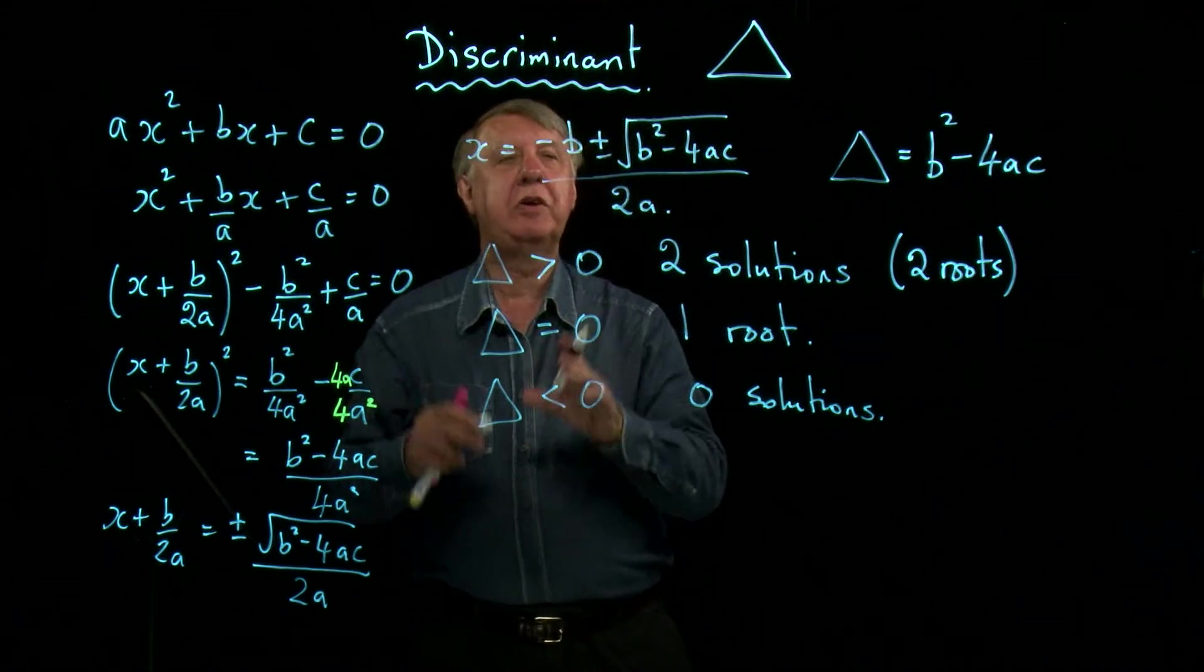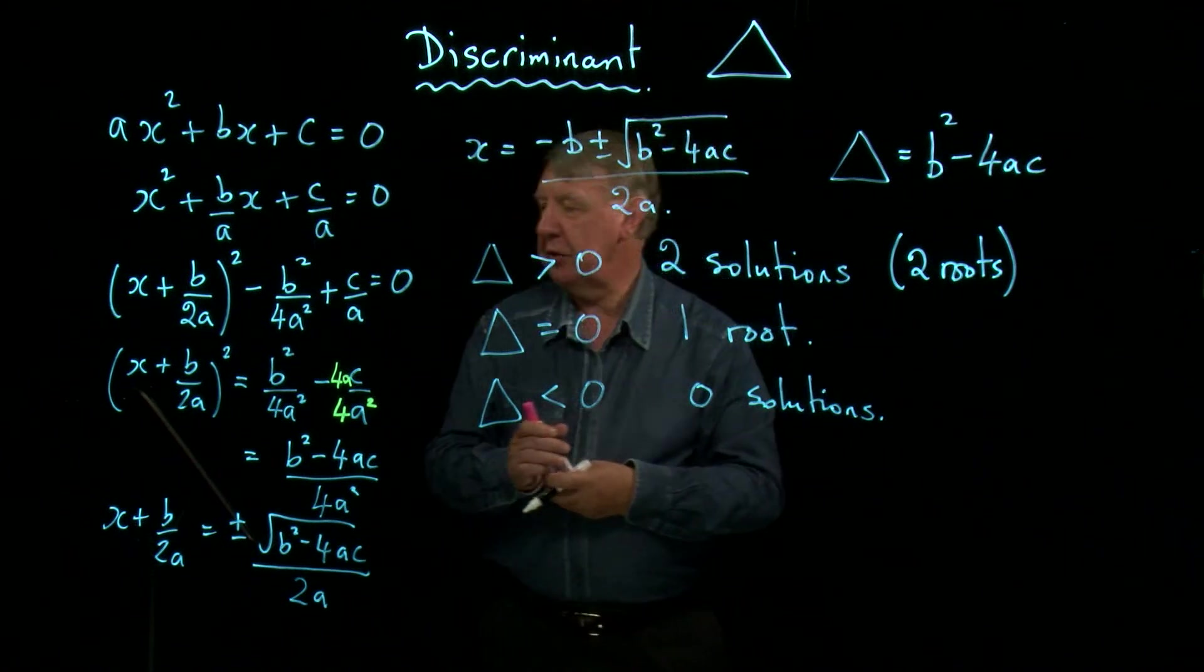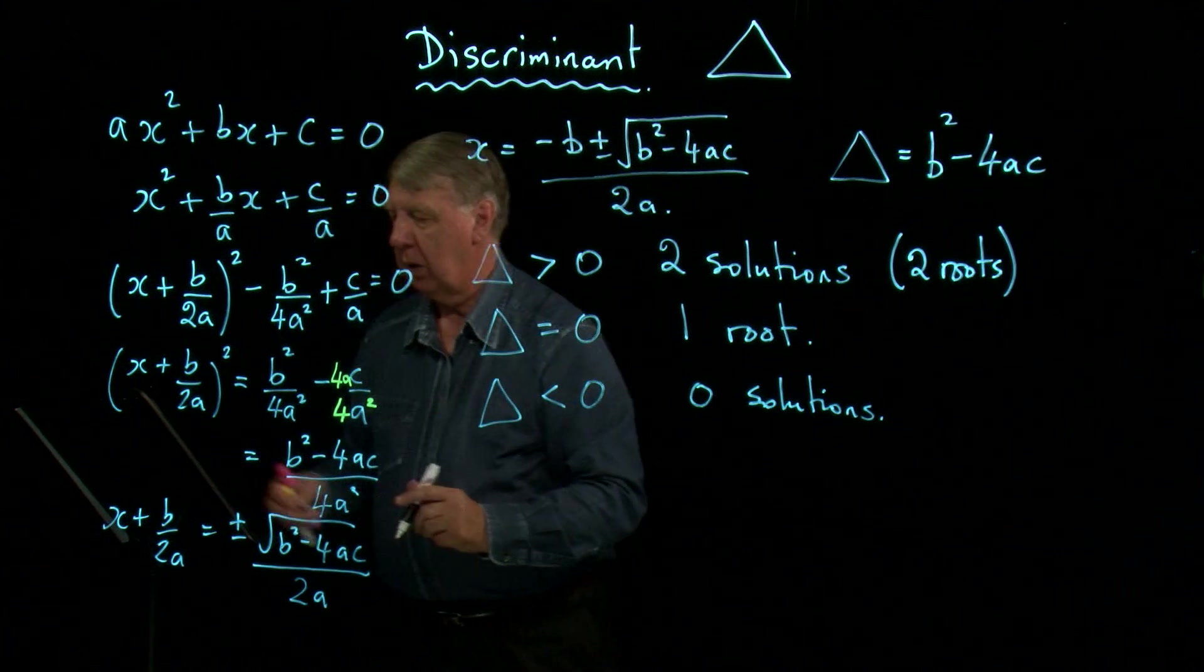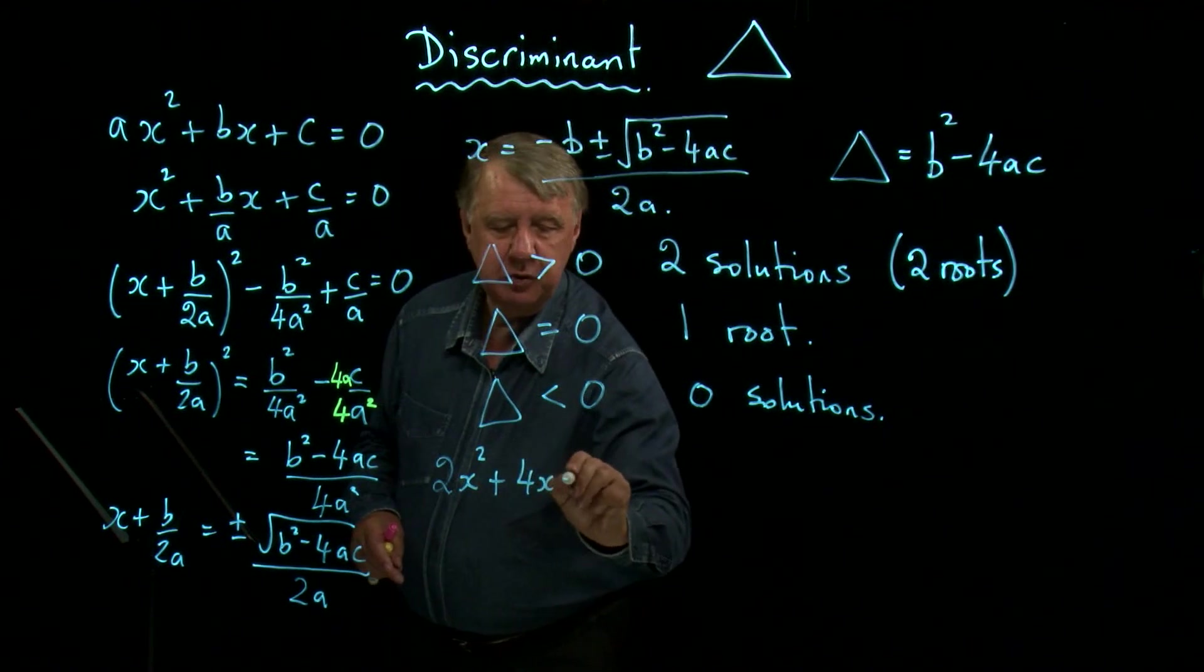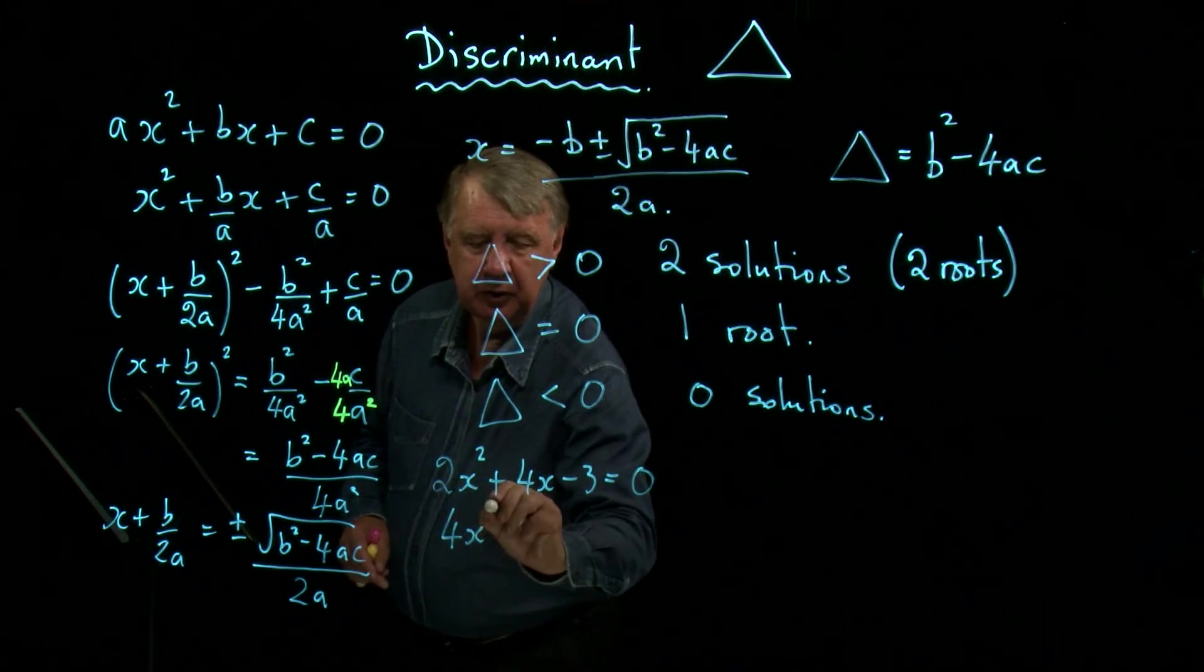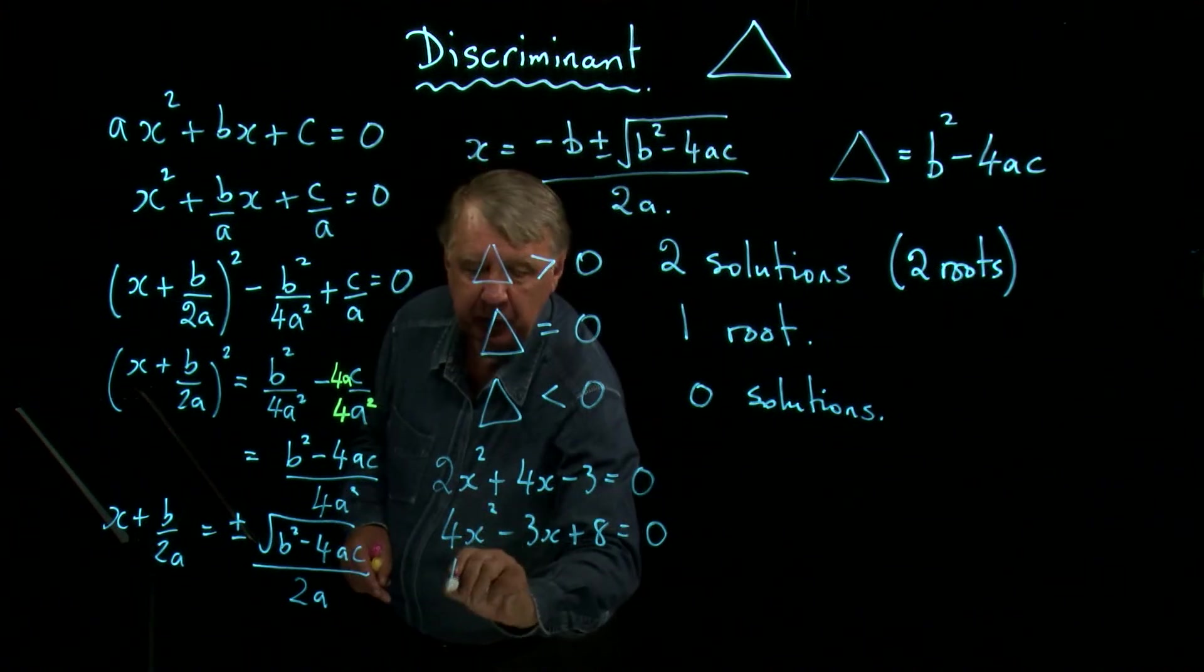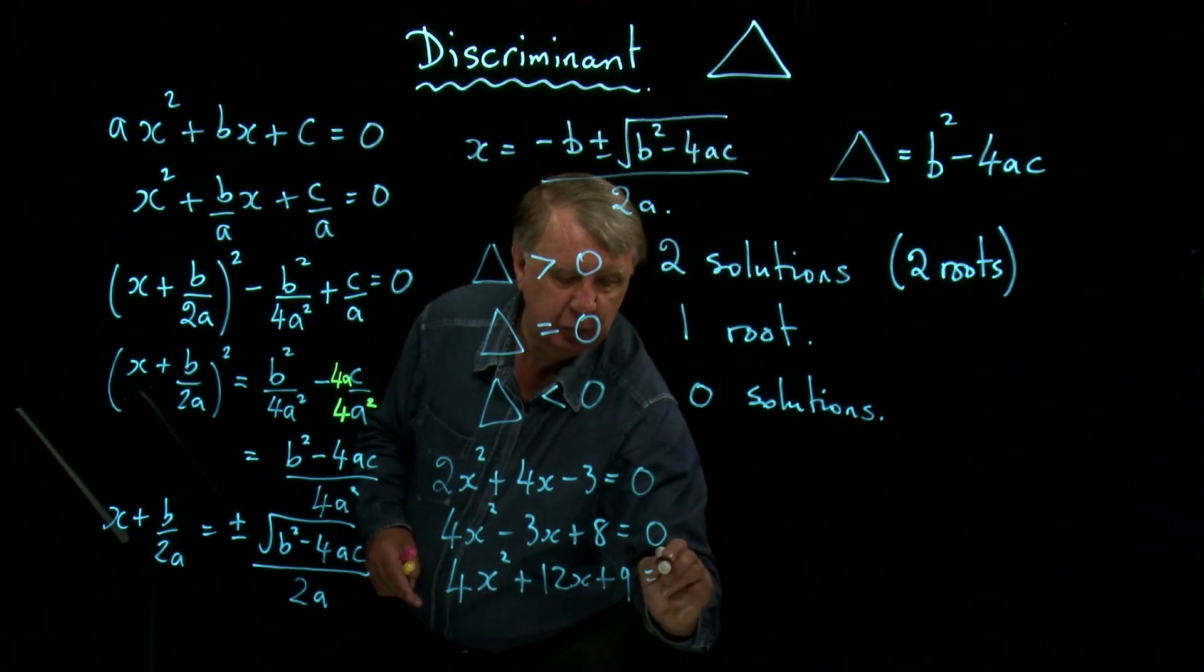So the discriminant is a very quick way of making a decision about your quadratic equation. So if we get hold of some examples here to copy down. So let's look at some quadratics then. 2x squared plus 4x minus 3 equals 0. Next one, 4x squared minus 3x plus 8 equals 0. And finally, 4x squared plus 12x plus 9 equals 0.